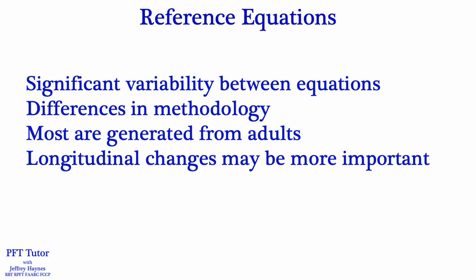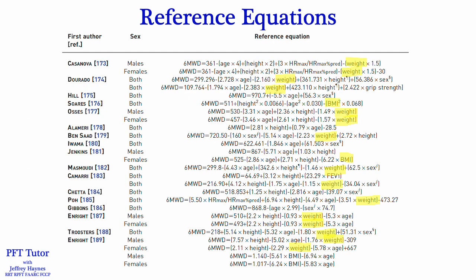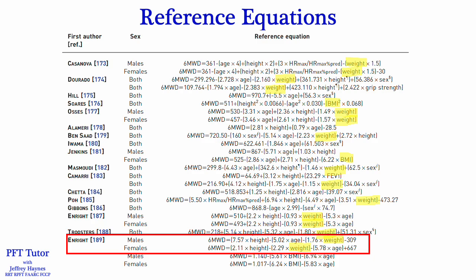You can use reference equations for the 6-minute walk test, but there are limitations. There is significant variability between equations, often rooted in methodology. Most reference equations are generated from adults, and longitudinal changes over time may be more important than percent predicted. One limitation of many equations is the use of weight. We use the Enright-Sherrill equations, which include weight, and I'll share a case report in which this skewed the results significantly.